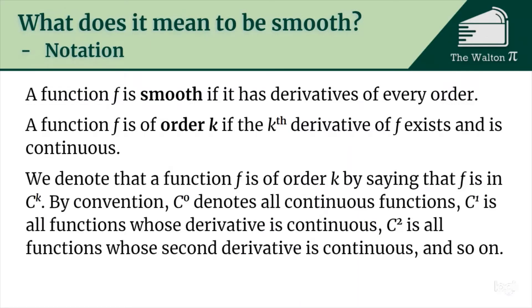So by convention, C0 denotes all continuous functions, C1 is all functions whose derivative is continuous, C2 is all functions whose second derivative is continuous, and so on. So a function is smooth if it is in C infinity.